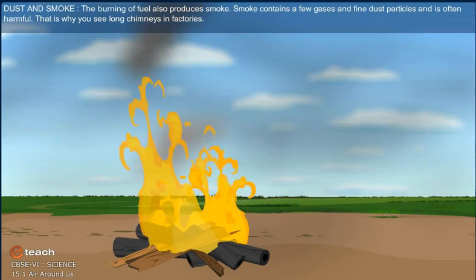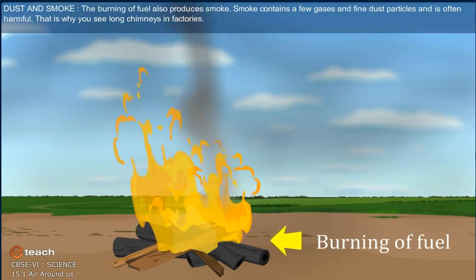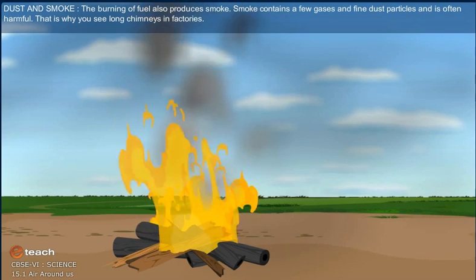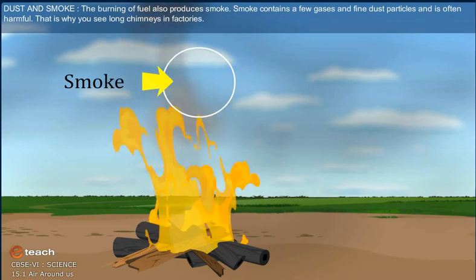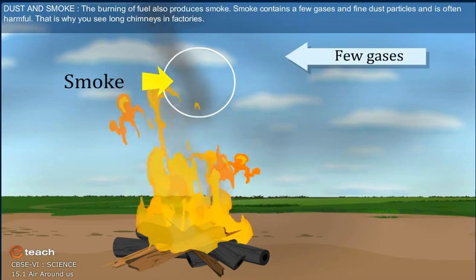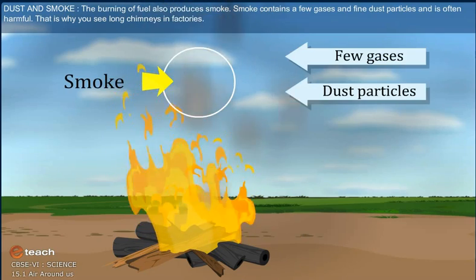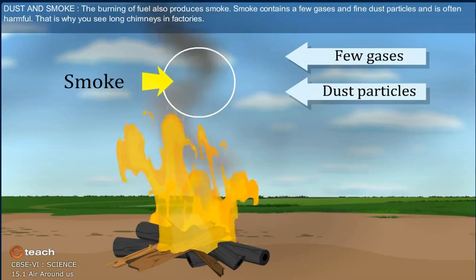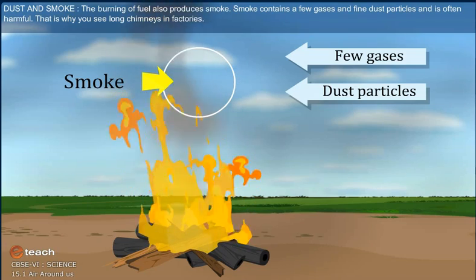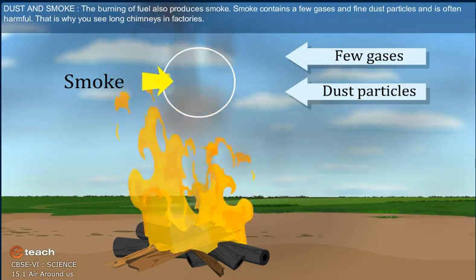Dust and smoke. The burning of fuel also produces smoke. Smoke contains a few gases and fine dust particles and is often harmful. That is why you see long chimneys in factories.